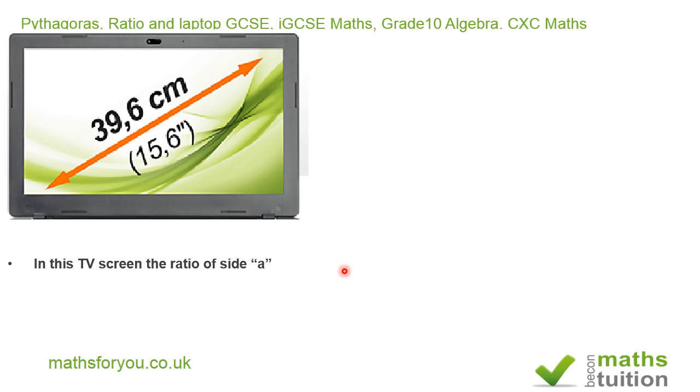We're supposed to find the length a and the length b. So length a will be this length here, and for length b we're looking for this length here.